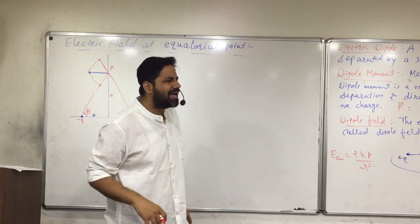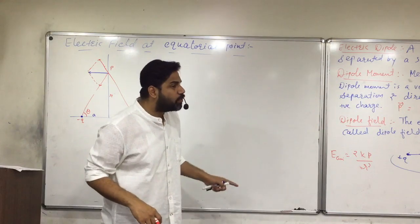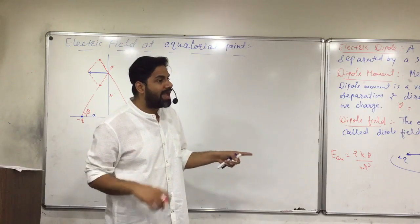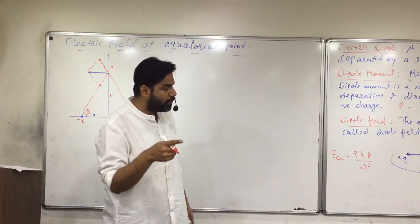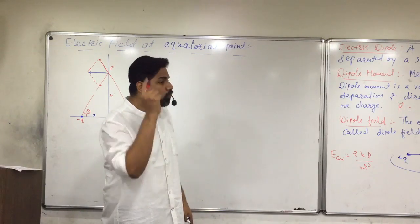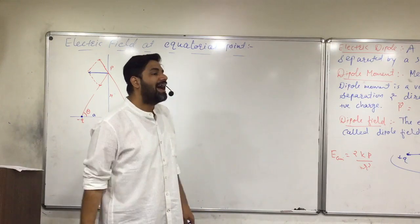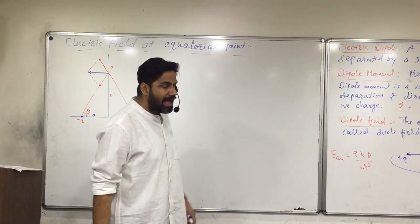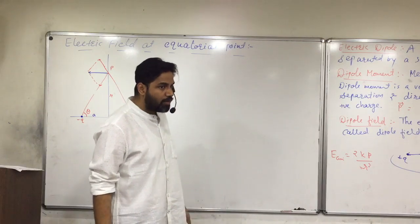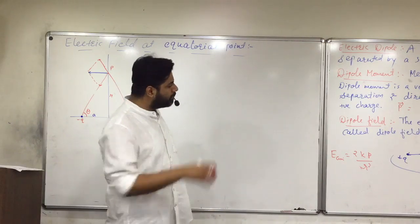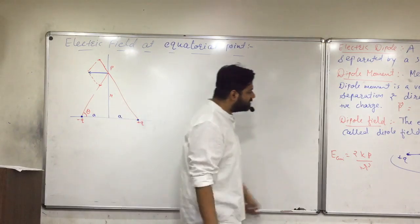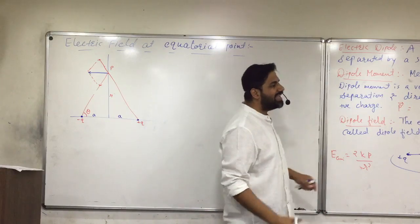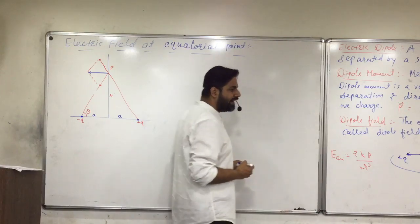Otherwise the full expression was 2kp r upon r squared minus a squared, whole squared. If you go very far, then E axial equals 2kp upon r cube.